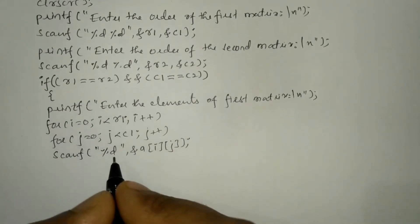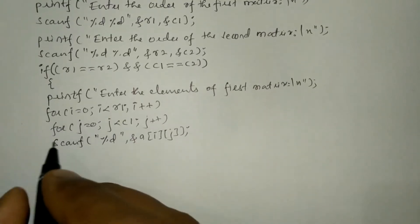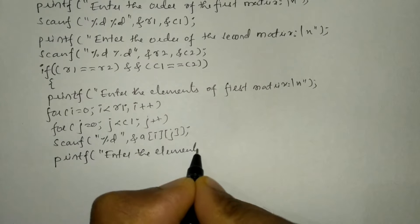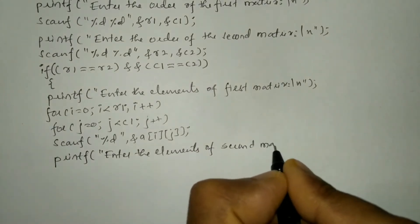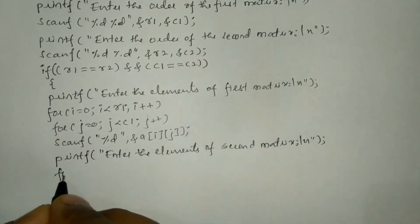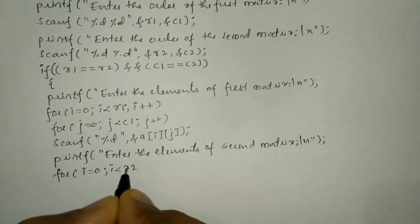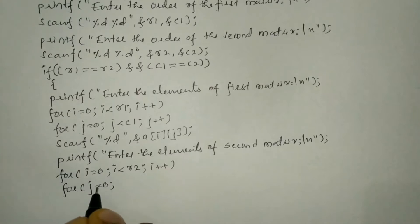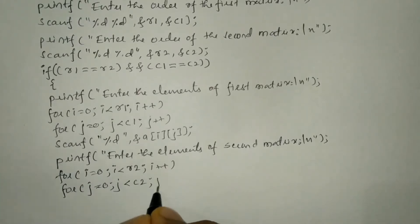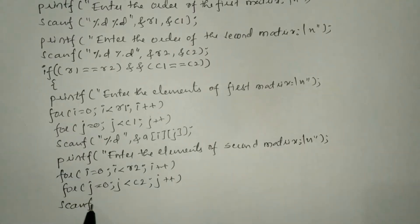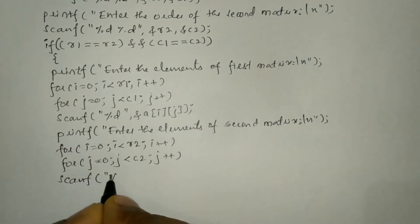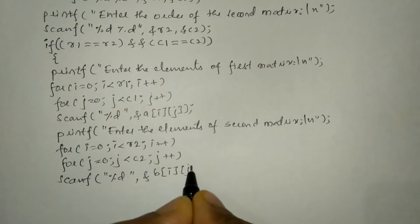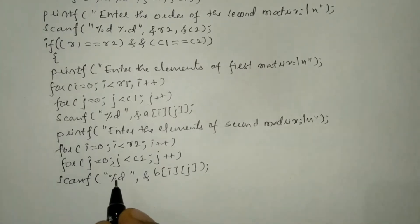Once we've received the first matrix, we ask the user to enter the elements of the second matrix. A printf statement prints 'enter the elements of second matrix' with a newline. Then we use nested for loops: for i equals zero, i less than R2, i plus plus; inner loop for j equals zero, j less than C2, j plus plus. We receive each element using scanf with %d and ampersand B[i][j] and put semicolon.